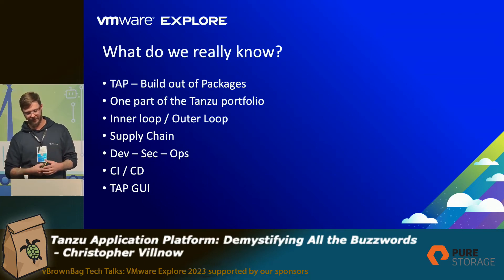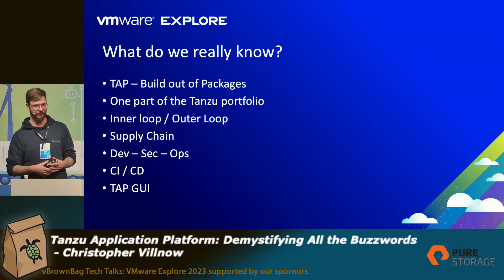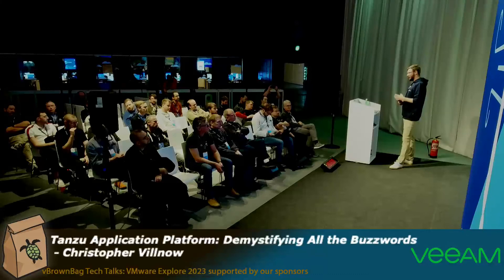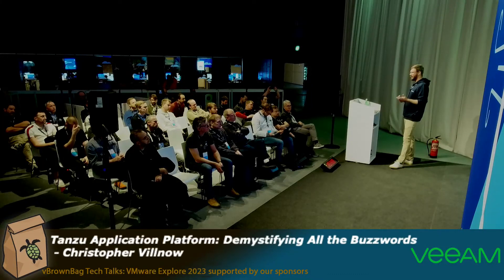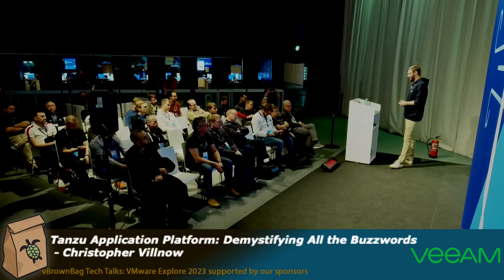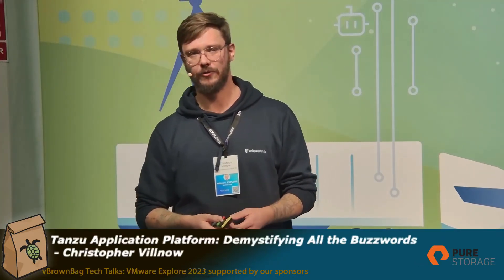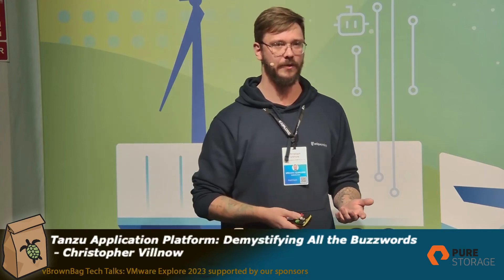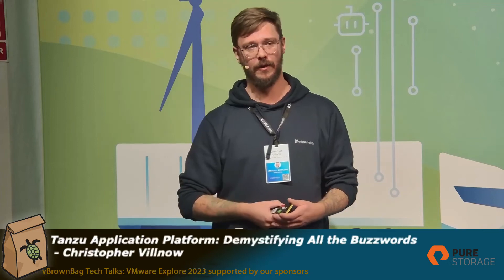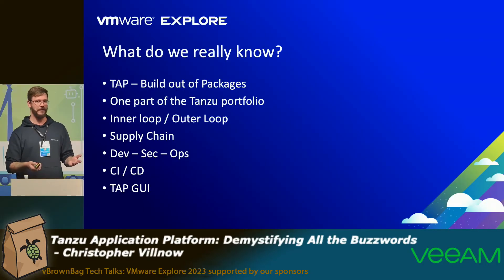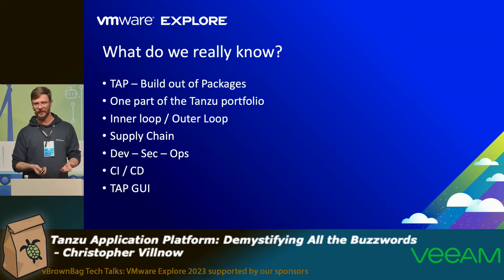CI/CD is an automated process of testing and deploying the applications into production — it's just an automated way. I figured out that the easiest way to show my colleagues and the customer is to show them the GUI, the TAP GUI, because it has a GUI at least for the VI admins. Does anybody know how it looks like here in the audience? Nobody? Awesome, okay, then let's have a look.